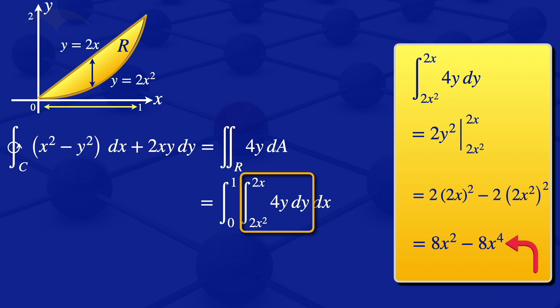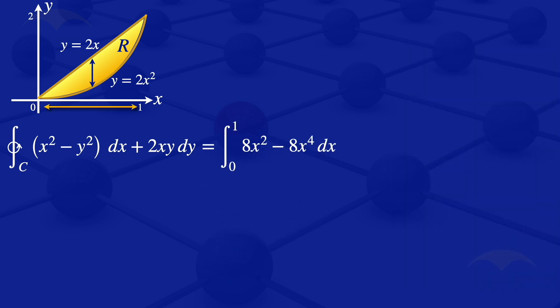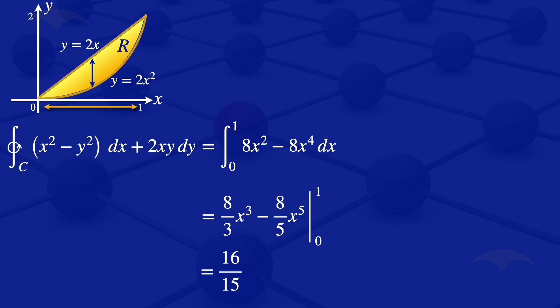Substituting this result, we now have the integral from 0 to 1 of 8x squared minus 8x to the power of 4 dx. Integrating gives 8 over 3 times x cubed minus 8 over 5 times x to the power of 5, evaluated from 0 to 1. Applying the limits gives the result 16 over 15. So the value of the line integral is 16 over 15.